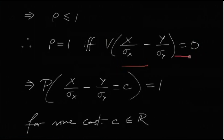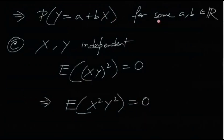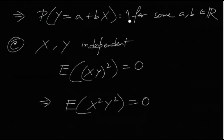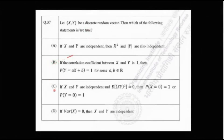If the variance is zero, the entire random variable is degenerate, meaning it equals some constant c with probability 1. Adjusting this, we get P(Y = a + bX) = 1 for some real numbers a and b. So option B is also true.